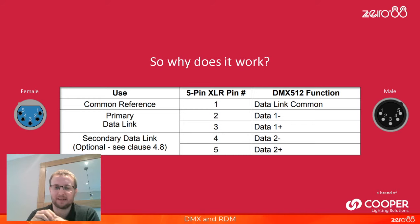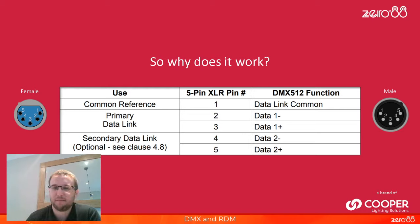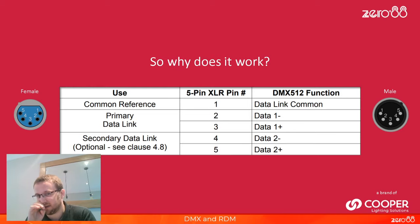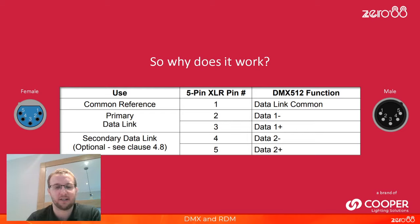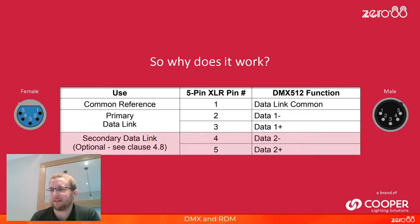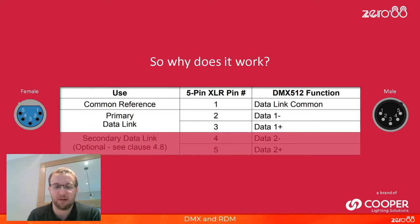When the standard was developed in the 80s, there were various ideas for what pins 4 and 5 would do — potentially getting data back from fixtures, or a second universe of DMX — but none of those are official. Most DMX cables, even 5-pin ones, often only have three cores soldered all the way through. There's a common misconception that remote device management uses pins 4 and 5 — that is completely not true, and we'll cover that later. So that is why 3-pin XLR physically works, but you shouldn't be using it.